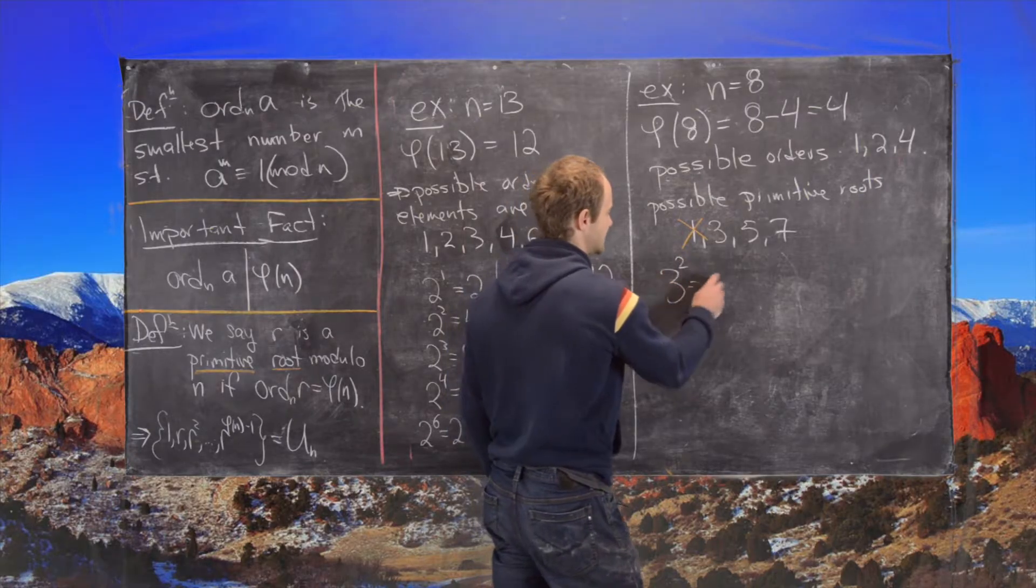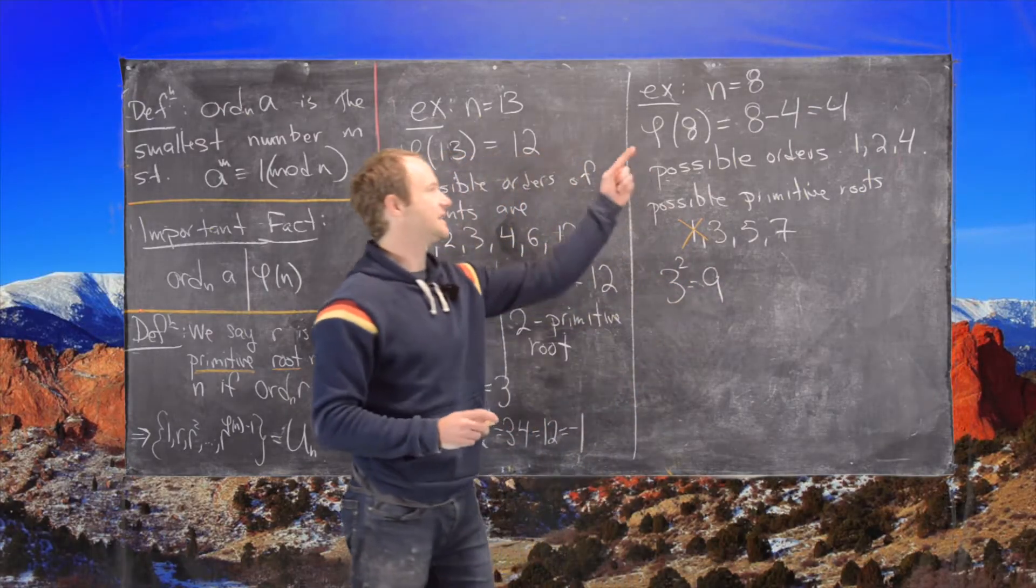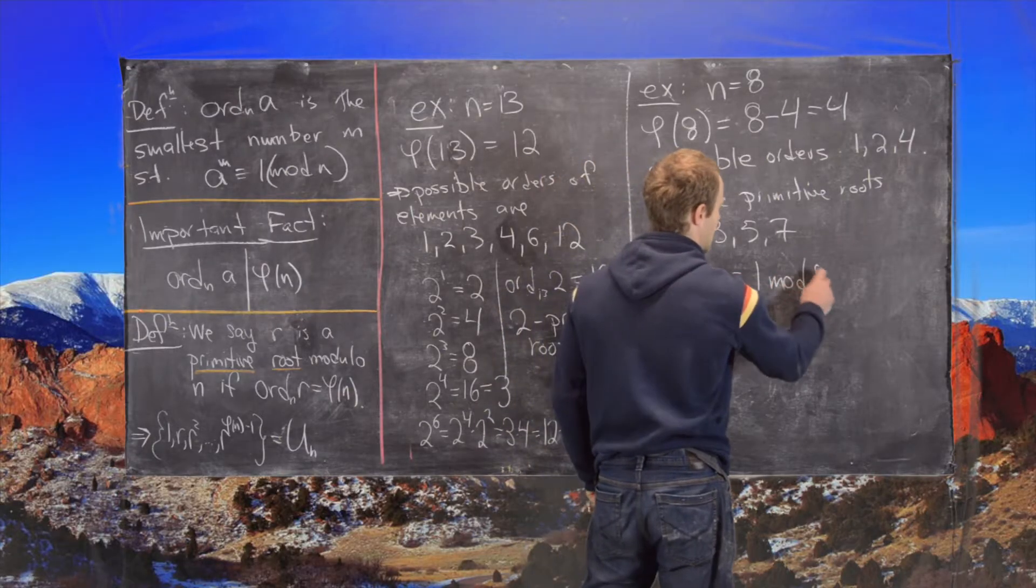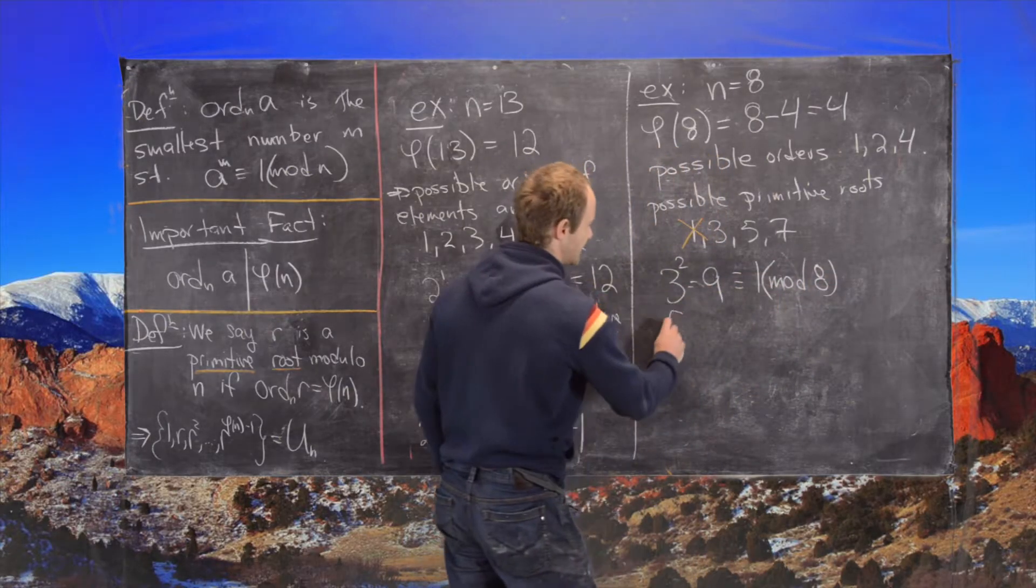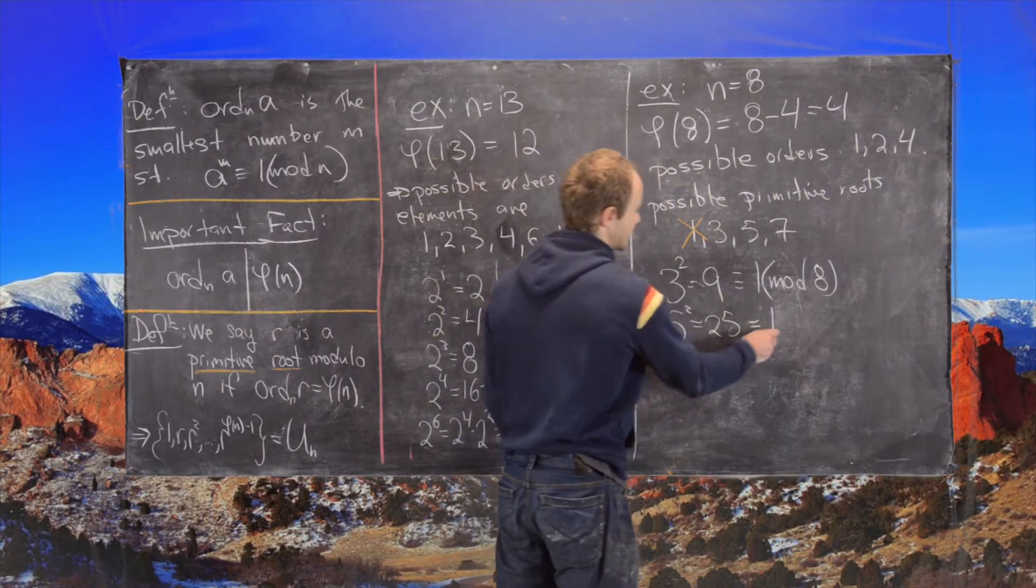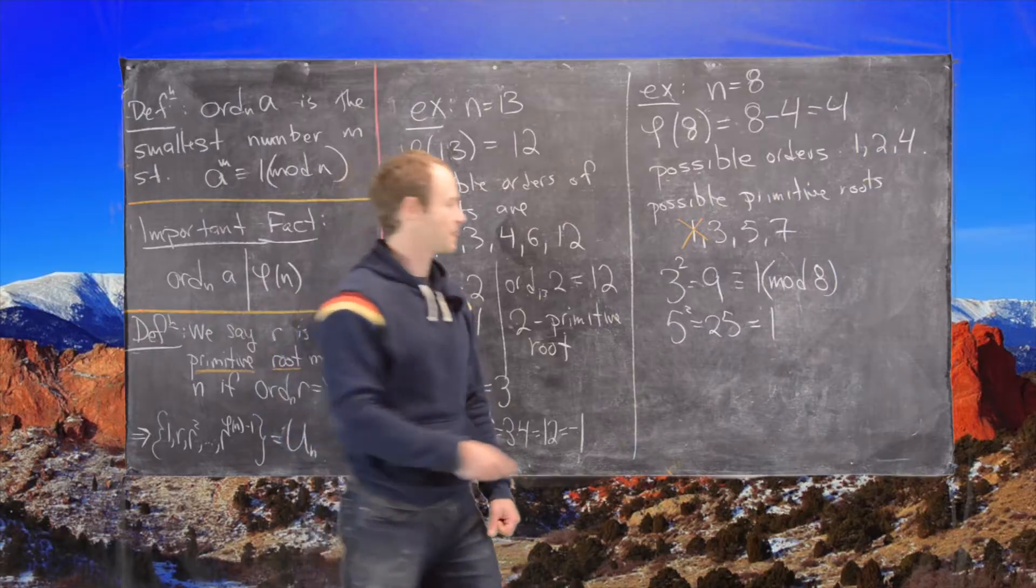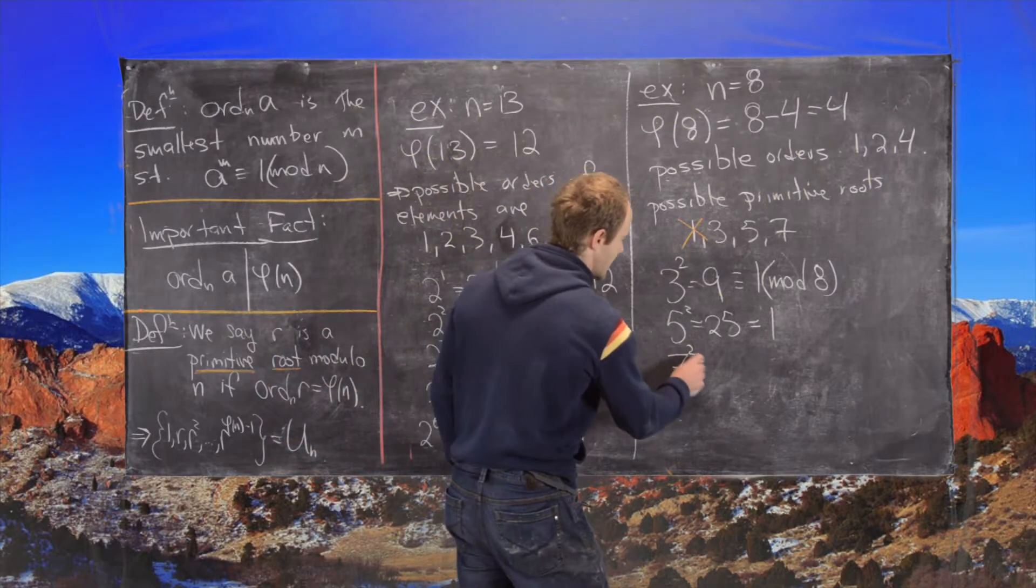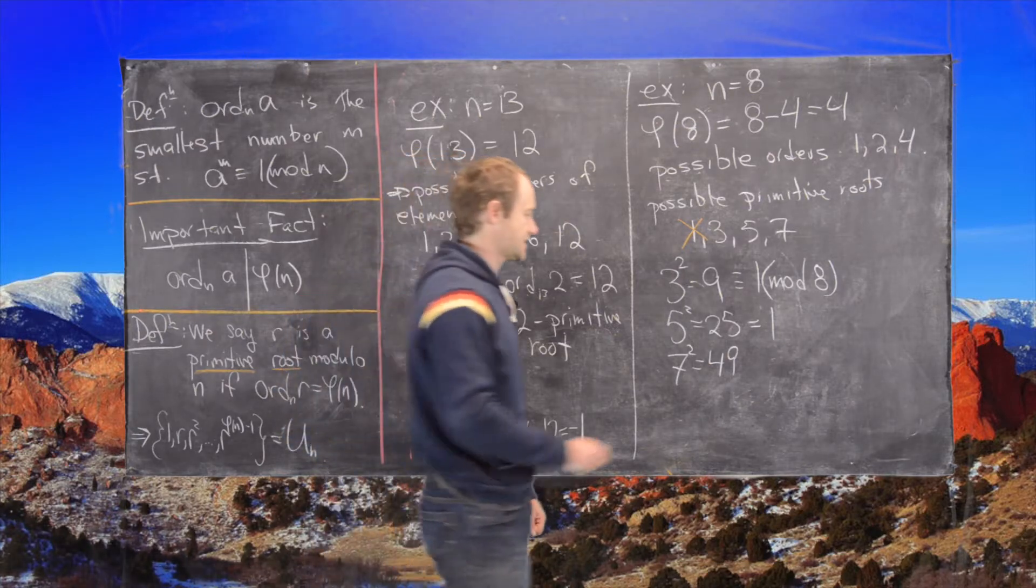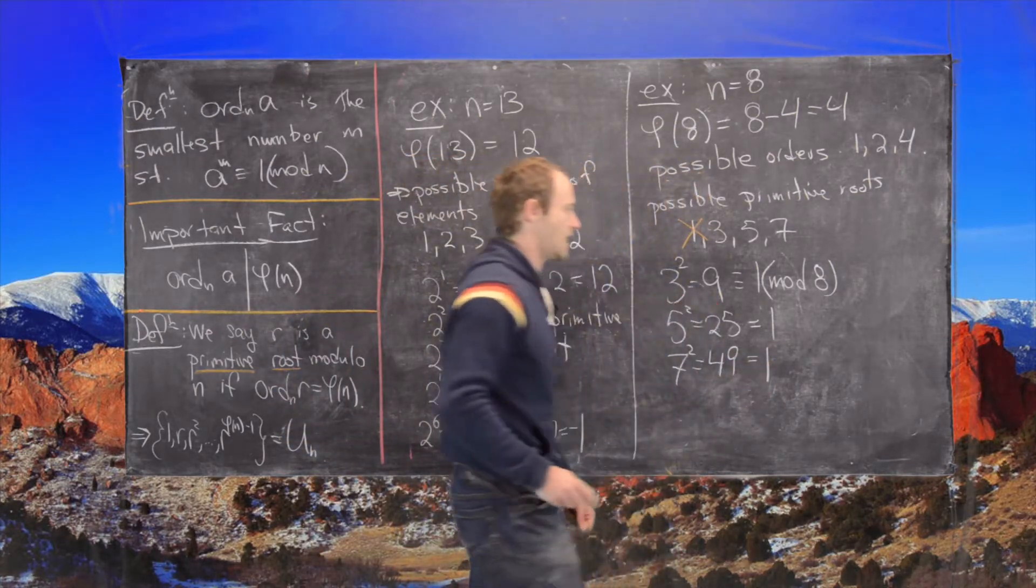3 squared is 9, but notice 9 is 1 more than 8, so that is 1 mod 8. Okay, so 5 squared is 25, so that's 1 more than 24, so that's also 1. And then 7 squared is 49, so that is 1 more than 48, which is also 1 mod 8.